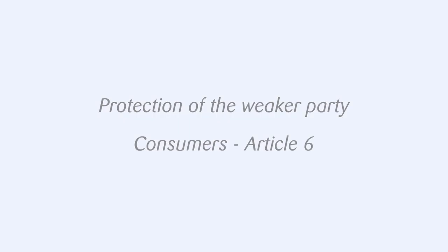Protection of the weaker party — Consumers, Article 6. A contract between a consumer and a professional, as defined in Article 6, is governed by the law of the country where the consumer has their habitual residence, if either the professional carries on business activities there, or by any means directs such activities to that country. Any choice of law in a contract between such parties cannot have effect if it would deprive the consumer of protections which would be available if the applicable law was that of the consumer's habitual residence. These rules do not apply in the case of certain contracts for services provided to the consumer other than in the consumer's country of habitual residence, contracts of carriage other than package travel, contracts relating to immovable property other than timeshares, and certain financial instruments.